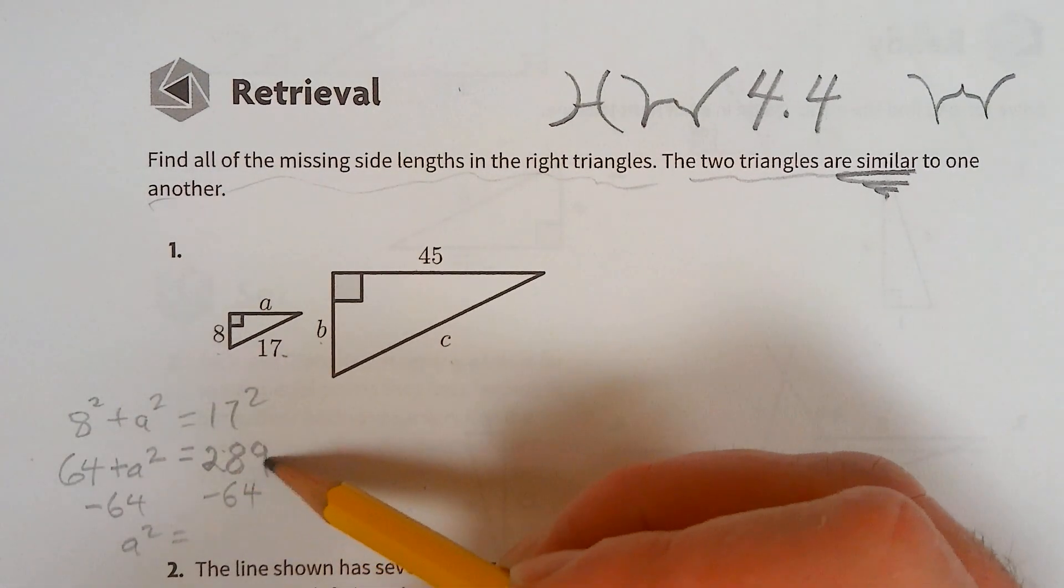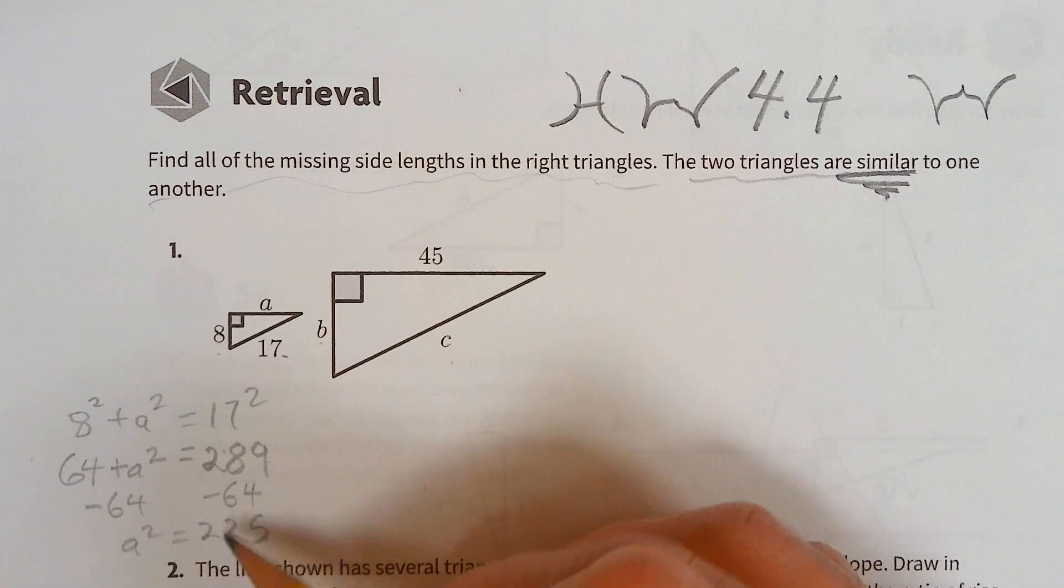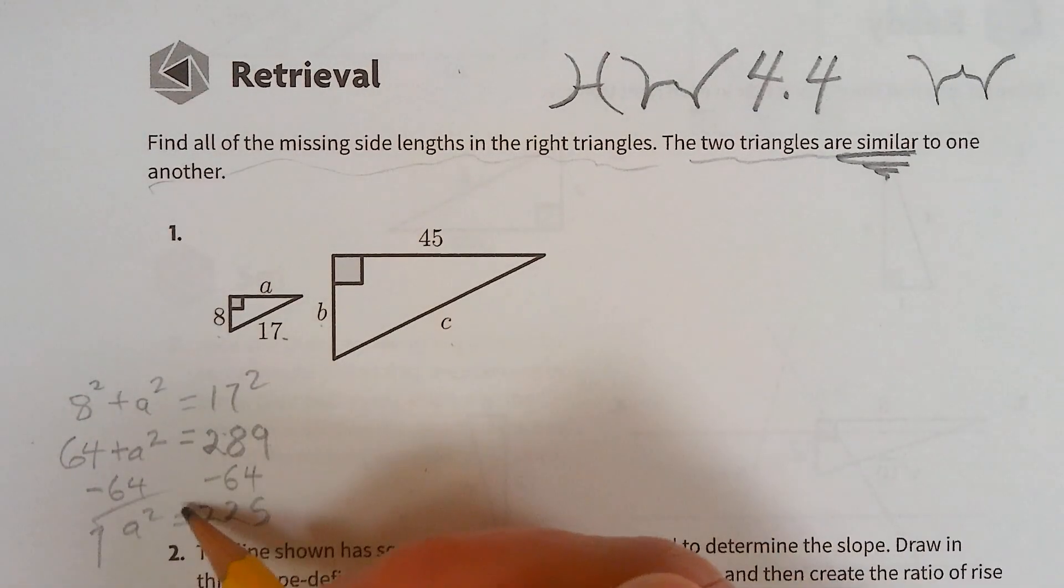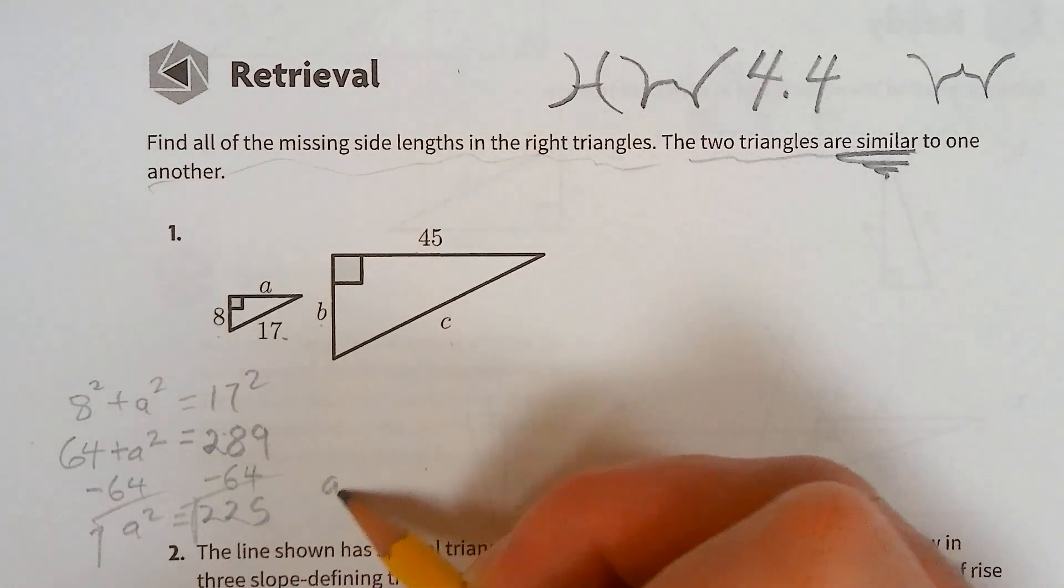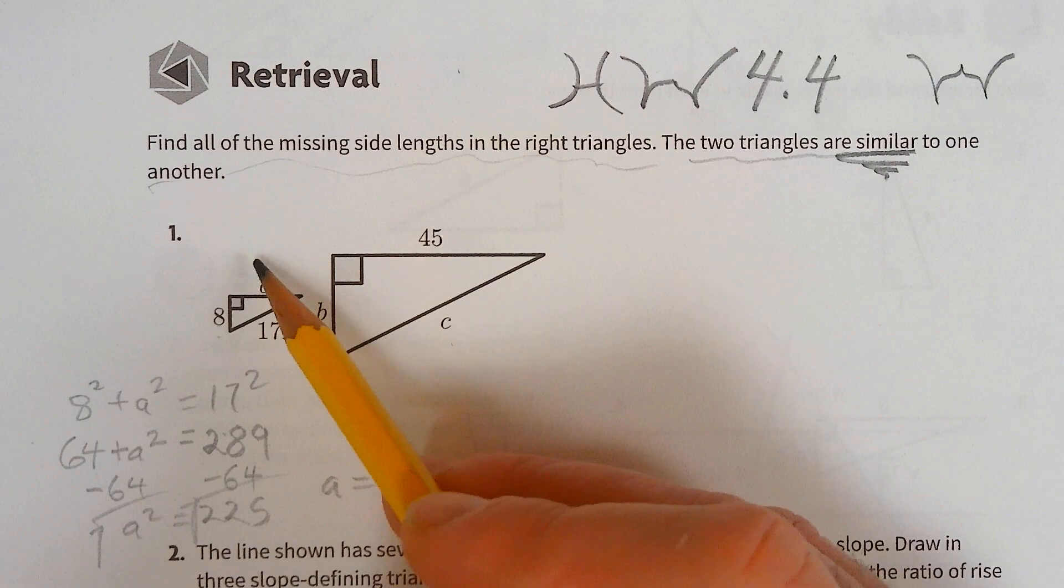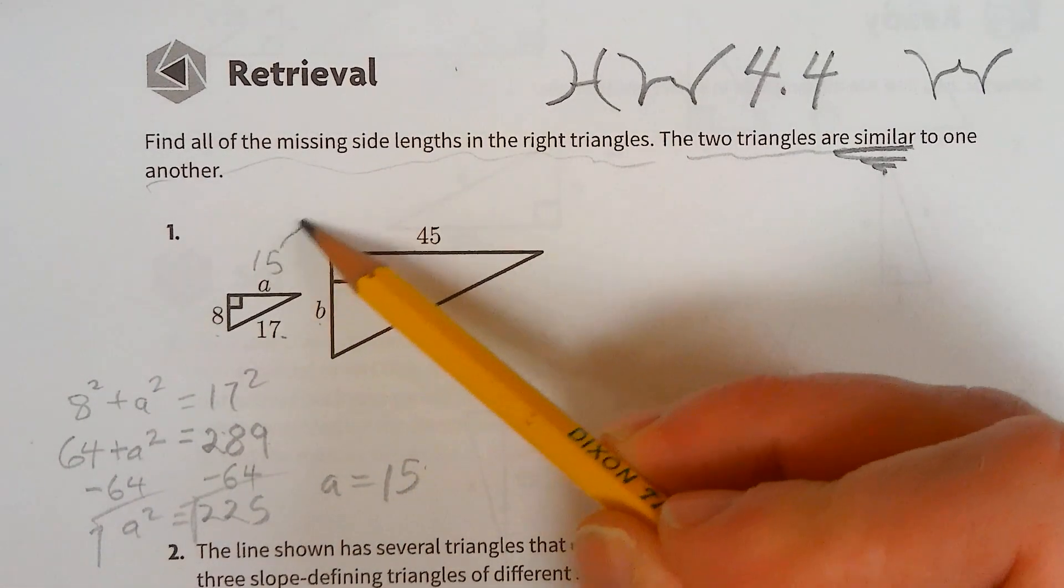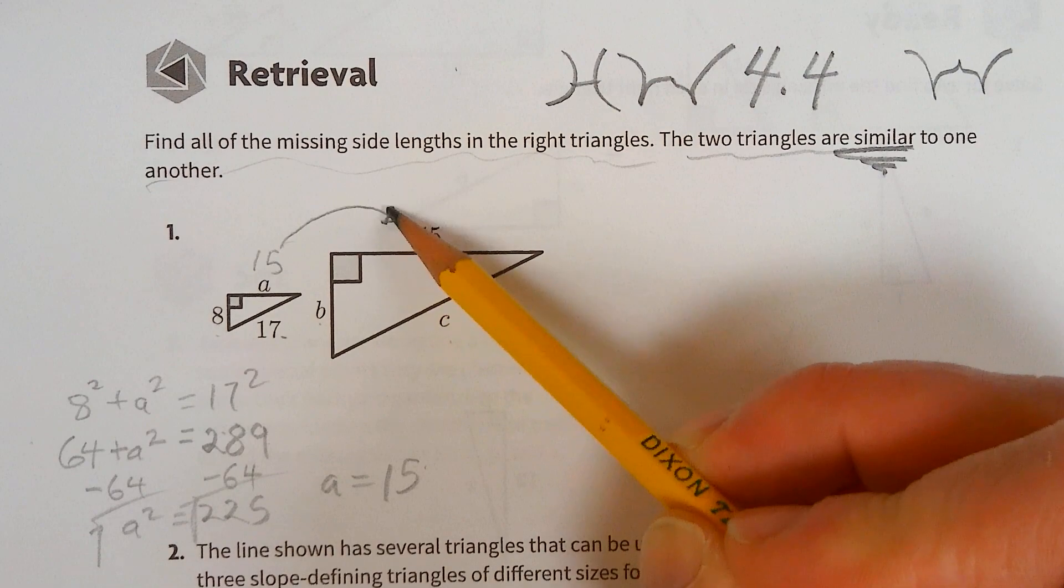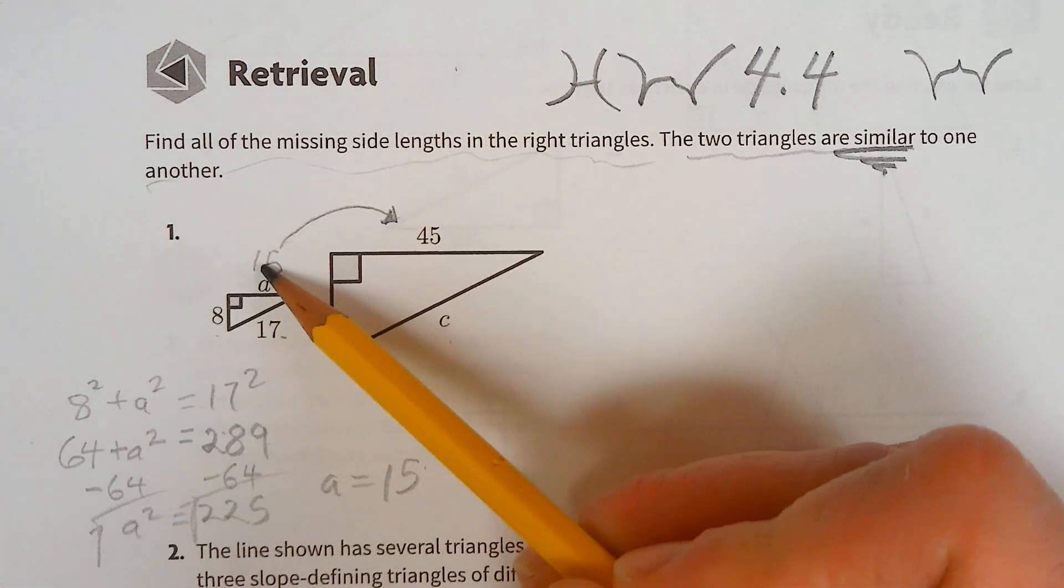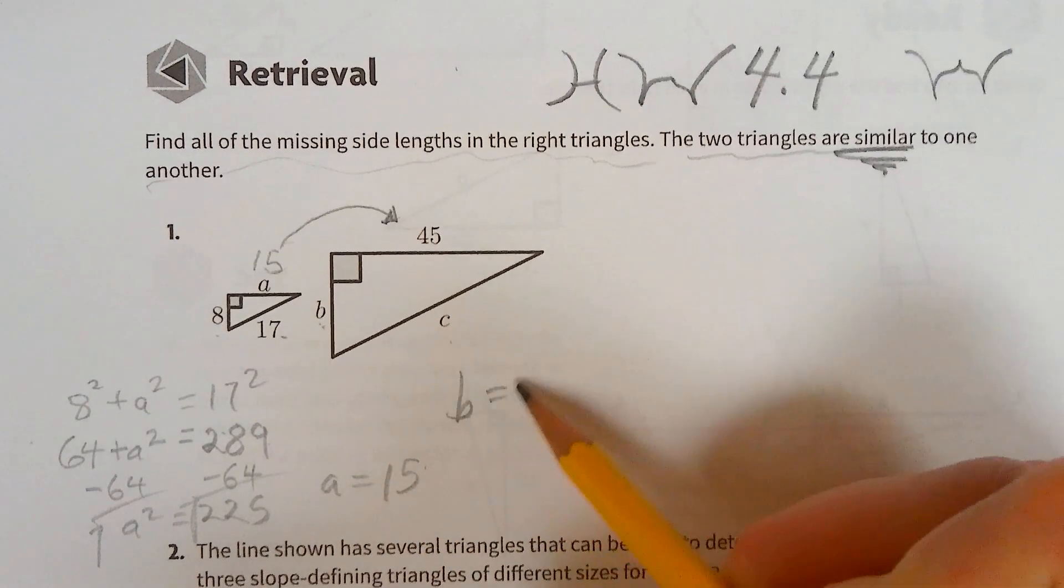This is 225, yes, there we go! So now when we square root both sides, we get 15. Sweet! Now we know the scale factor or ratio here is times 3, so this b is 18.